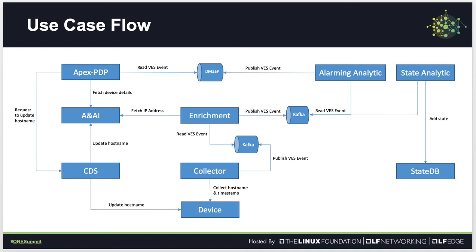Enrichment adds the IP address to the VES notification event and publishes it to analytic via another Kafka topic. State analytic will detect the change in host name and, if found, add it to State DB to maintain a record of various state changes happening in the device. Alarming analytics will detect whether the threshold for changing the host name has been crossed. If it has, alarming analytics will create a VES alarm and send that to policy via DMAP.